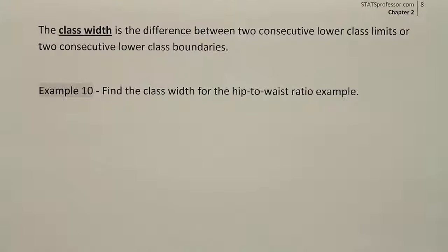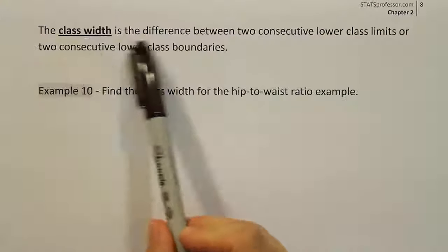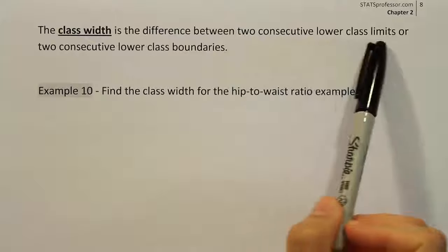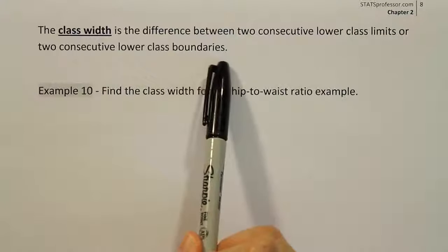So in example 10 here we're looking at the definition of the class width and we're going to figure out how to find it from a table that's already been created. The class width is the difference between two consecutive lower class limits or two consecutive lower class boundaries.